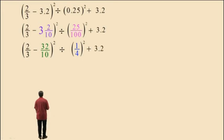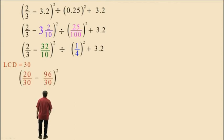Now 25 hundredths reduces to 1/4. So we'll reduce and we'll bring down our work. Now we need an LCD for those two fractions in the parentheses. The LCD for a 3 and a 10 is 30. So we need to multiply 2/3 by 10/10 and the 32/10 by 3/3. And that should give you 20/30 subtract 96/30 in the parentheses.